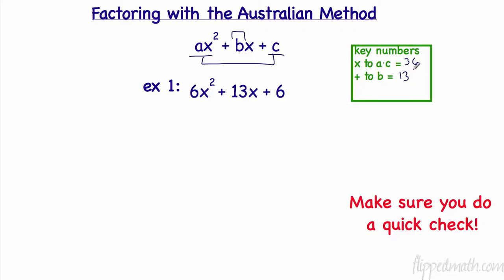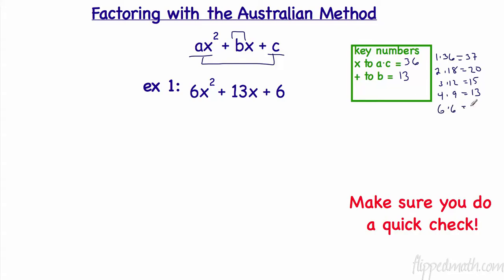I'll show you a couple of ways to do this. As you practice you'll get better at recognizing factors. If you're unsure, just list the factor pairs: 1×36 adds to 37, 2×18 adds to 20, 3×12 adds to 15, 4×9 adds to 13 — that's the one we want. 5 doesn't divide evenly, and 6×6 adds to 12.